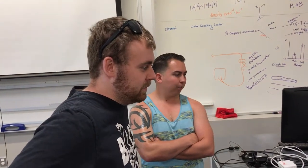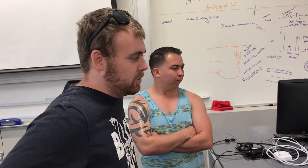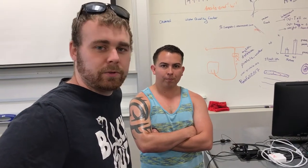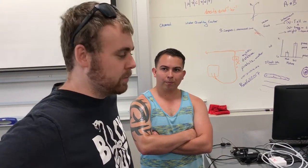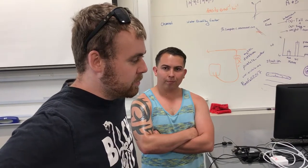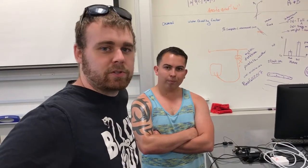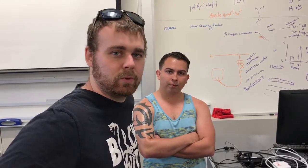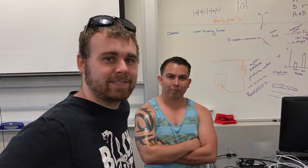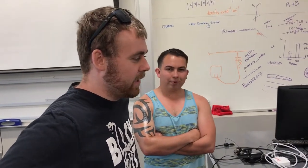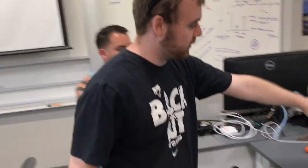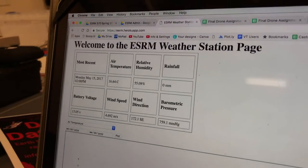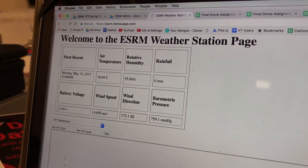Heroku is the off-site web hosting service we're using that's free. Because of the allotted free amount you're given, it should not ever be overdone. It's simply used by going to the requested domain, which is currently esrm.herokuweb.com, but is currently being transitioned to a more user-friendly site: weather.esrm.zone. On that page, you'll be able to see the current weather — as of 2 p.m., that's the most recent data — updated every half hour.